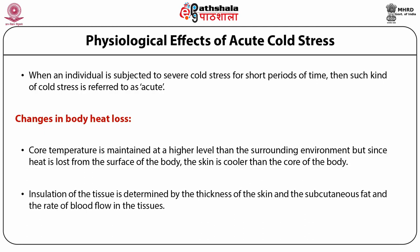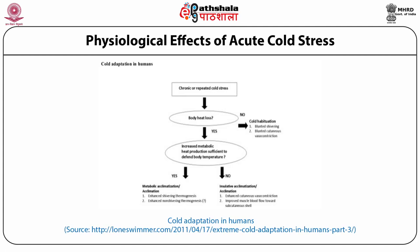Insulation of tissue is determined by the thickness of the skin and subcutaneous fat, and the rate of blood flow in the tissues. With chronic or repeated cold stress, if there is no body heat loss, cold habituation occurs — with blunted shivering and blunted cutaneous vessel constriction. If body heat loss does occur, increased metabolic heat production defends body temperature through metabolic acclimation, enhancing both shivering and non-shivering thermogenesis. If metabolic heat production is insufficient, insulative acclimatization occurs, with enhanced cutaneous vasoconstriction and improved muscle blood flow toward the subcutaneous shell.